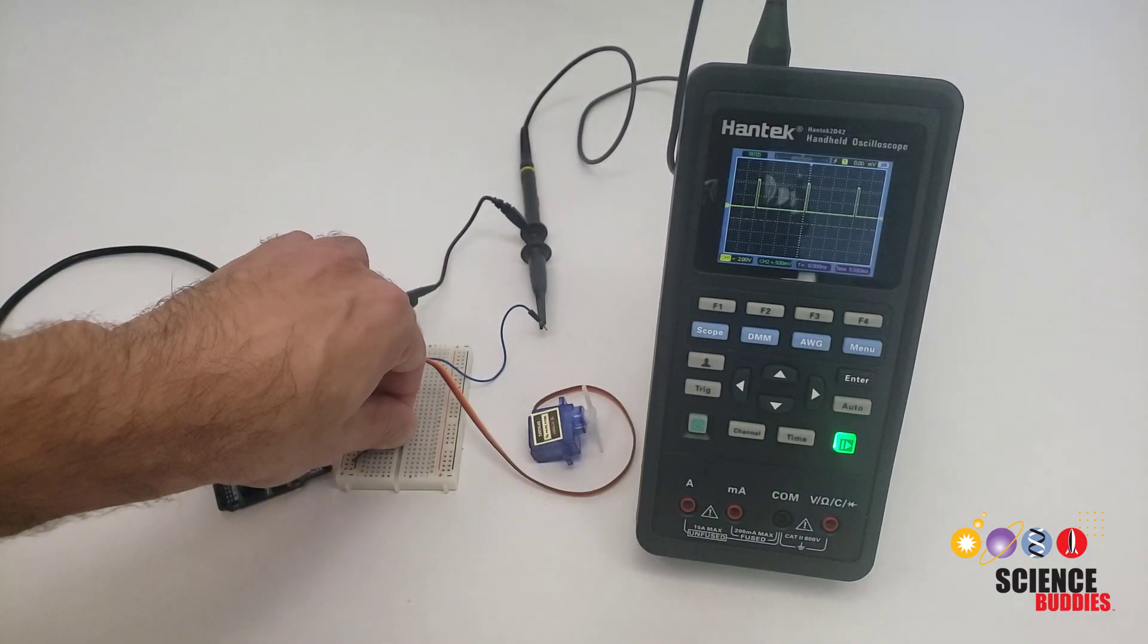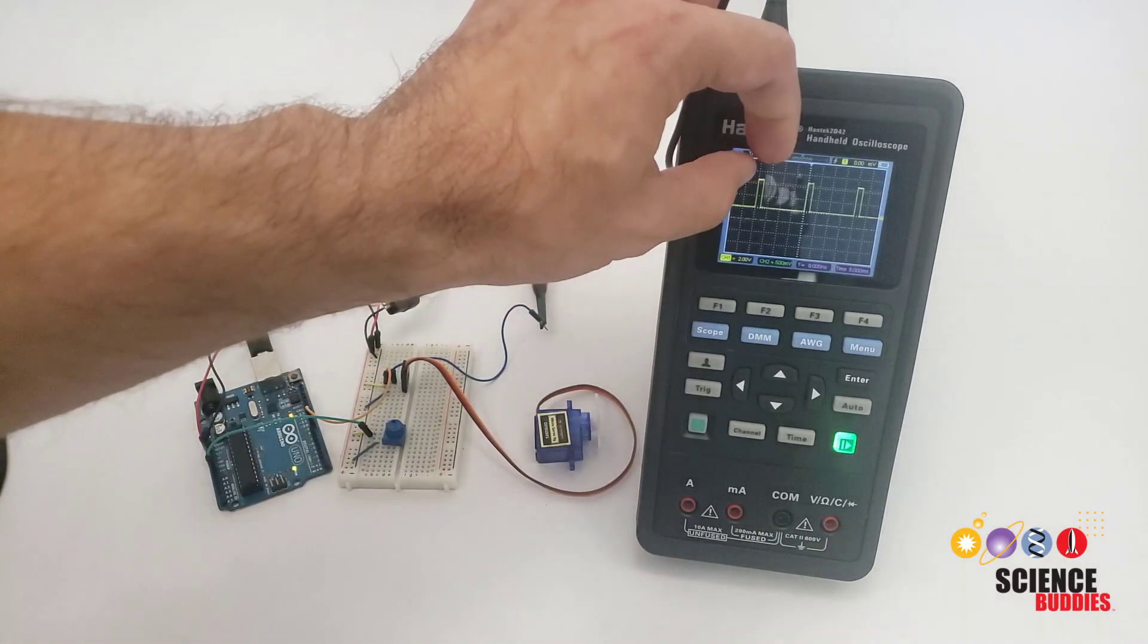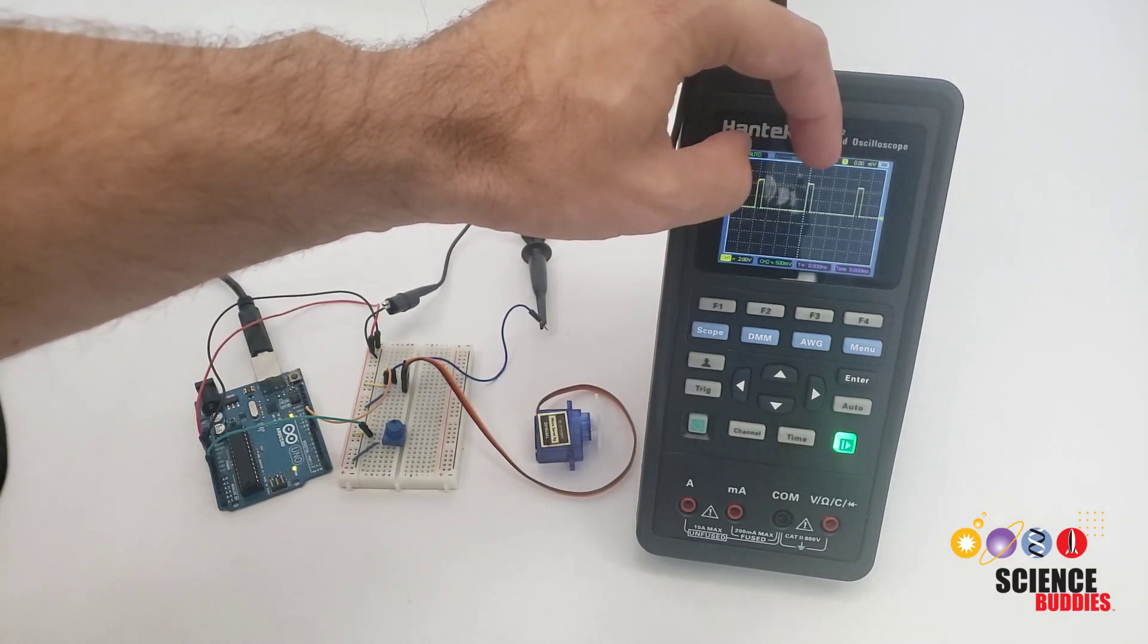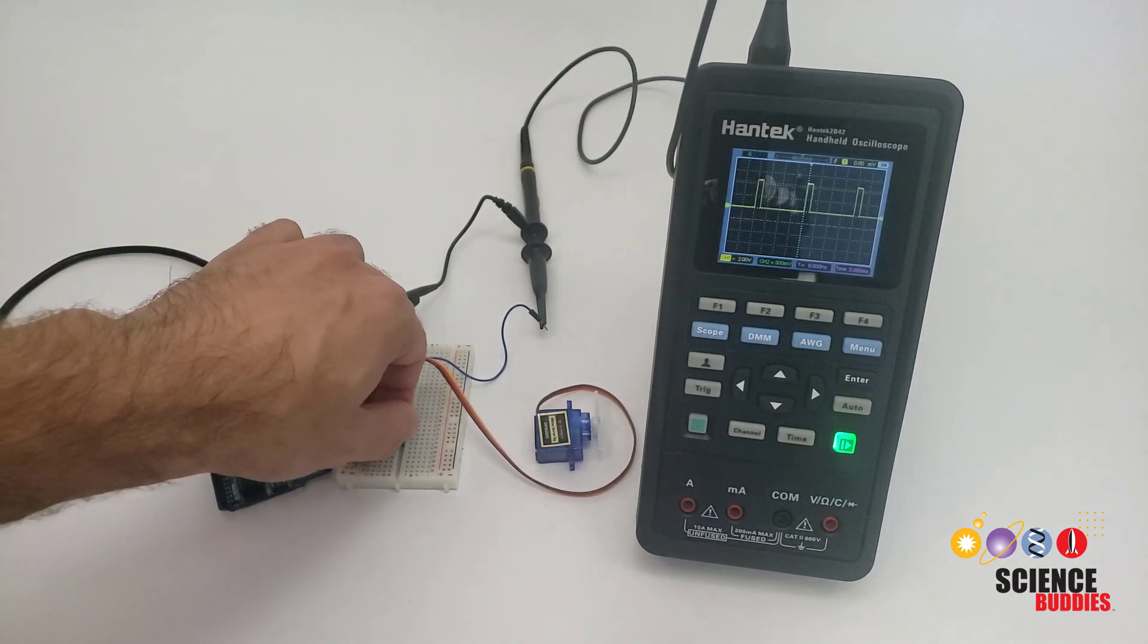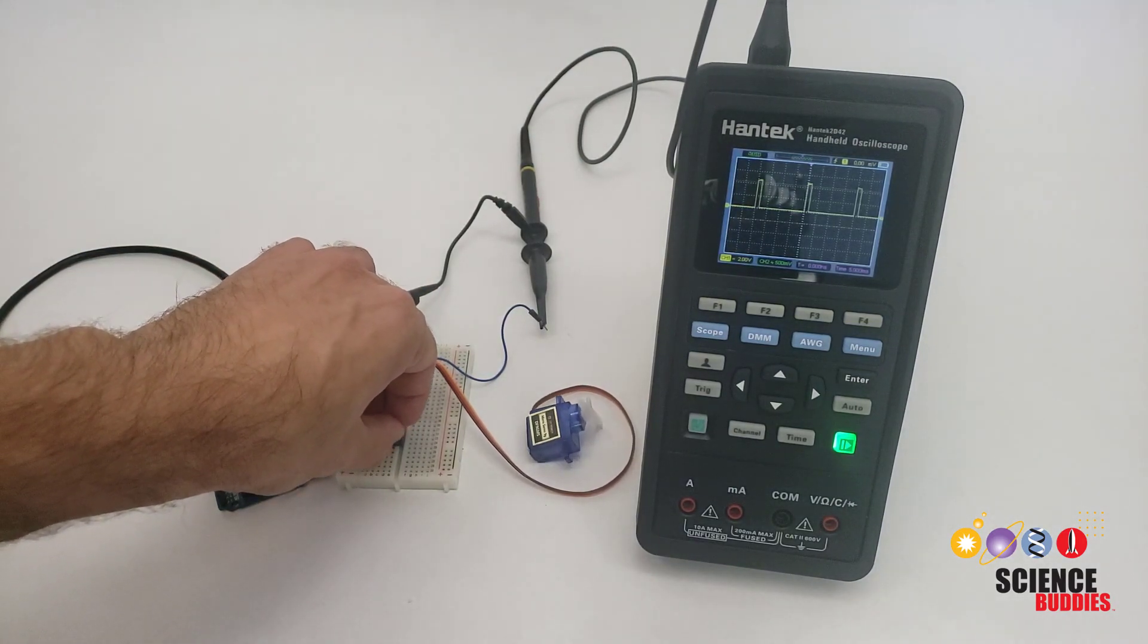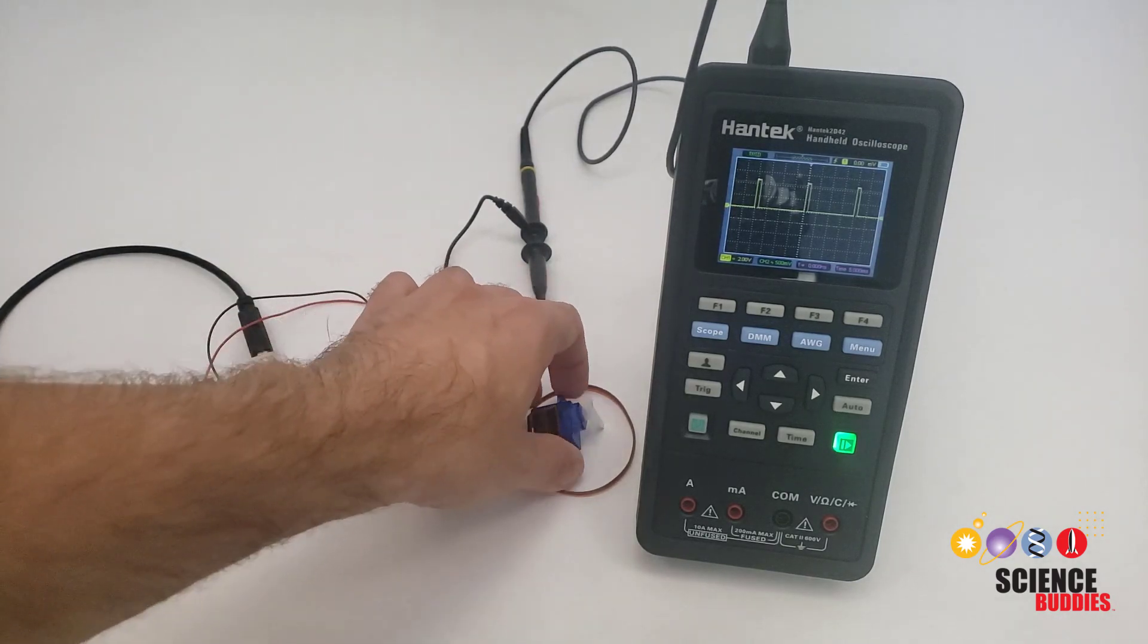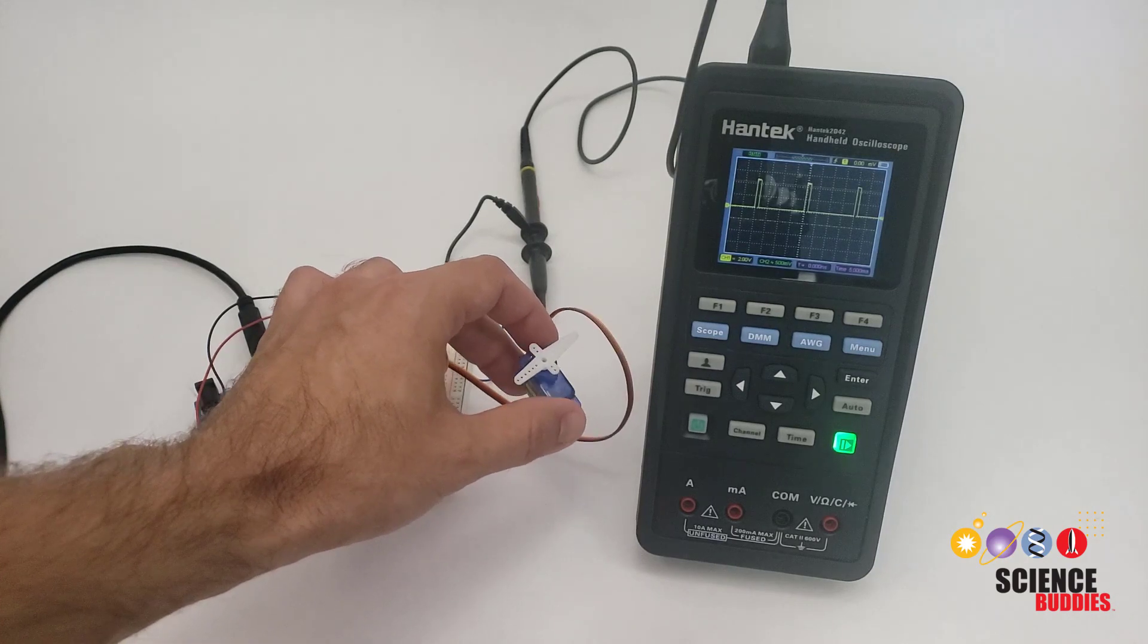I'm not changing the period of the signal, so the time from the beginning of one pulse to the beginning of the next pulse stays the same. But I am changing the duty cycle, or the percentage of time that each pulse is high. That duty cycle, or pulse width, is interpreted by the servo motor, and in this case converted to an angular position.